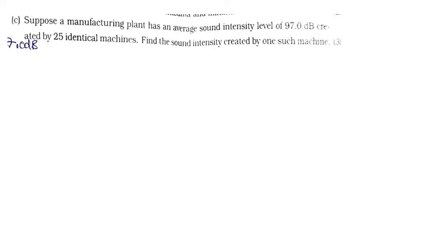Now the best thing here to work out this problem is, we need just to find the intensity. The intensity which we are going to find when the decibel was 97. If we divide that by 25, that is going to be the intensity of one machine. So let's go ahead and do that.